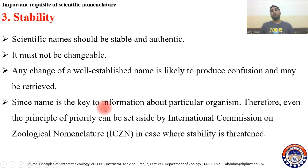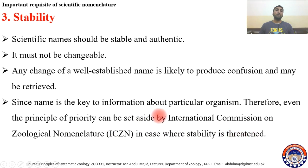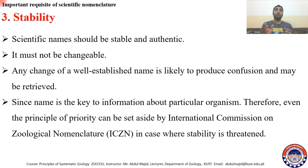Since the name is the key to information about a particular organism, even the principle of priority can be set aside by the international commission on zoological nomenclature in cases where stability is threatened. Even the rules and principles of priority can be ignored where stability is harmed. Stability is very important.